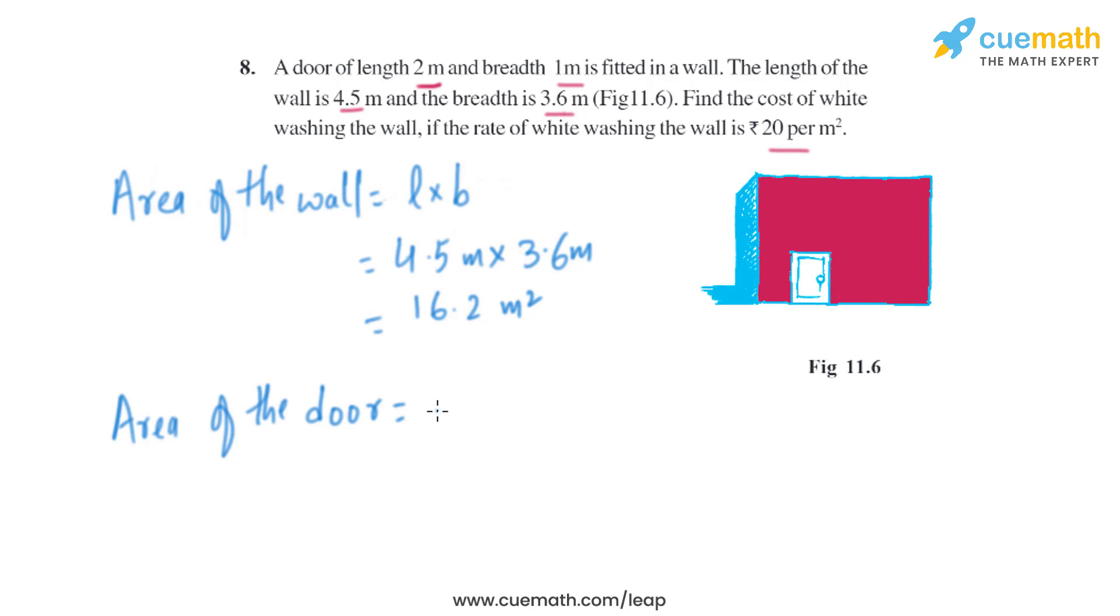Now let's find the area of the door, which is also L times B as it is rectangular. So it is 2 meters times 1 meter, which is basically 2 square meters. That will be the area of the door.